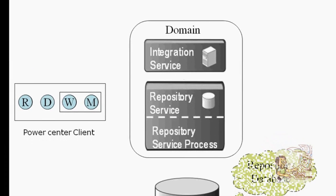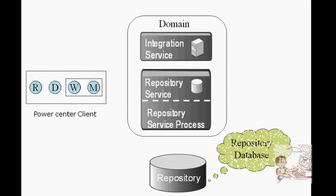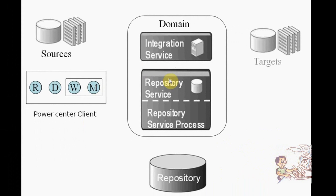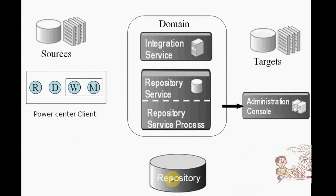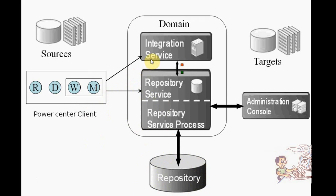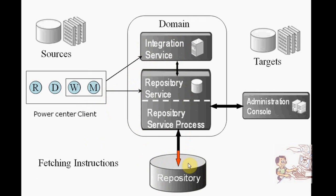This is the client part in Informatica. In the admin part, within the domain, we create a repository and integration service. Each repository contains its own repository database. While creating mappings, we load metadata into the repository database. After creation of the flow, we send requests to the integration service for execution.